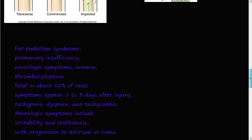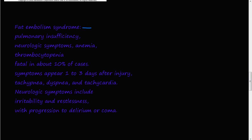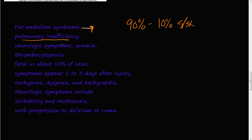If you have a long bone fracture or soft tissue trauma, you might develop fat embolism syndrome. Remember, 90% of severe long bone trauma results in fat emboli, but only 10% show signs and symptoms. To diagnose fat embolism syndrome, you look for: pulmonary insufficiency and difficulty breathing, neurological symptoms, anemia on blood tests, and thrombocytopenia — low platelets. 10% of fat embolism syndrome cases are fatal.